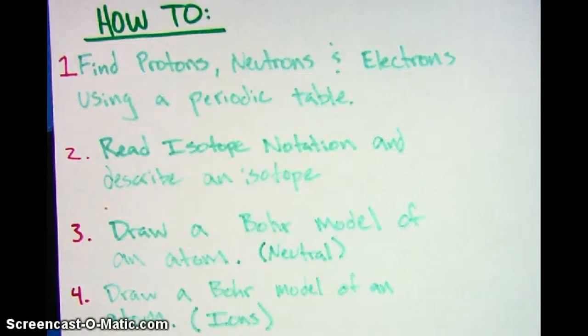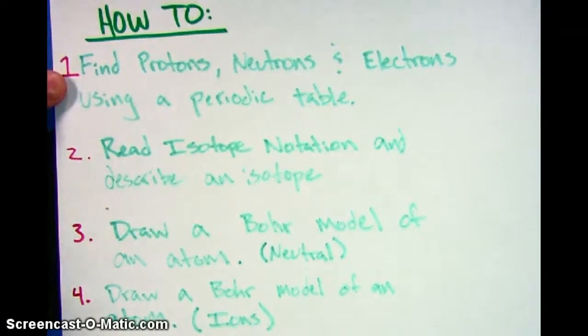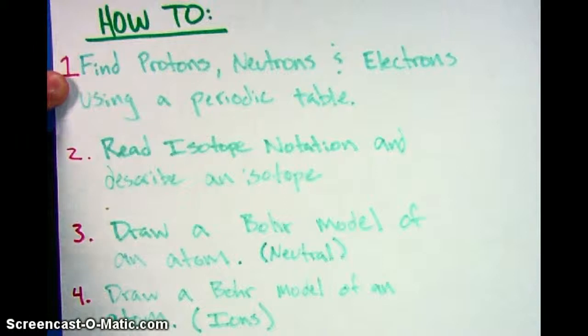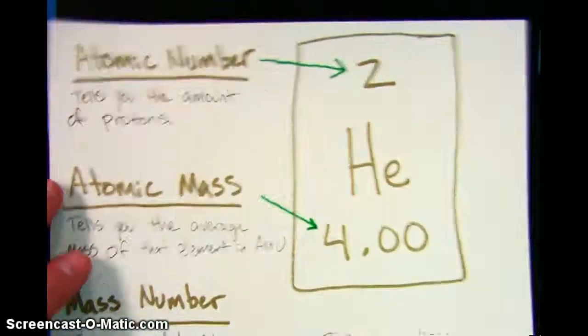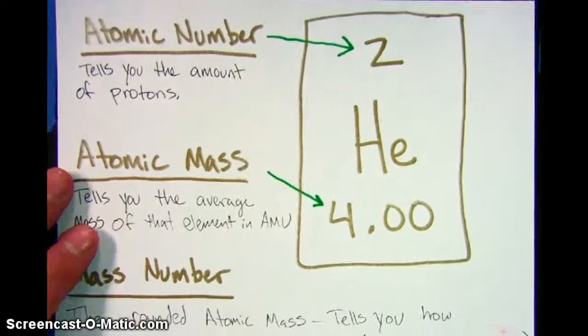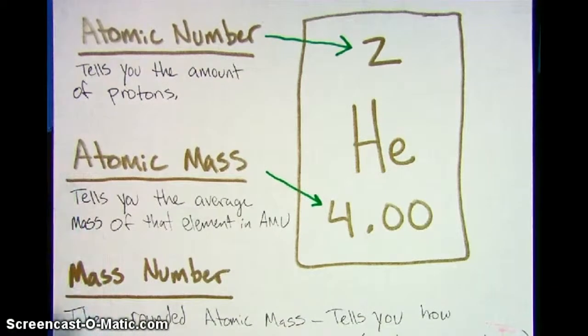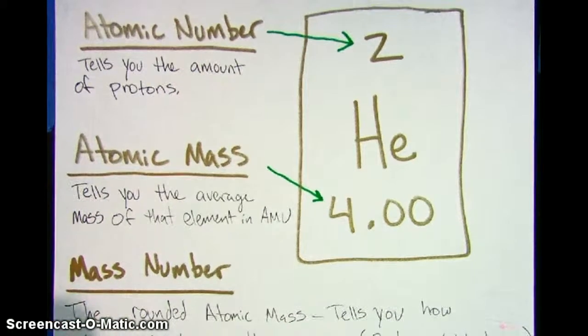In the first video, we're going to be talking about how do you find protons, neutrons, and electrons using a periodic table. The first place where we need to start is with this information. In order to find the information on a periodic table, we first need to know what the parts of the periodic table cards are.